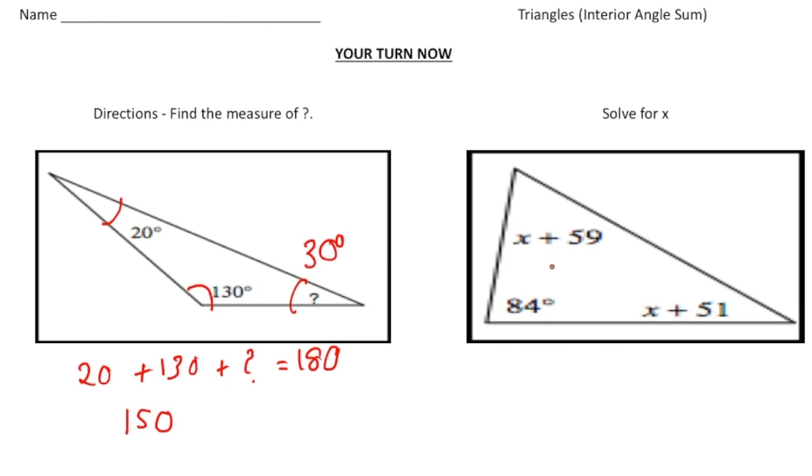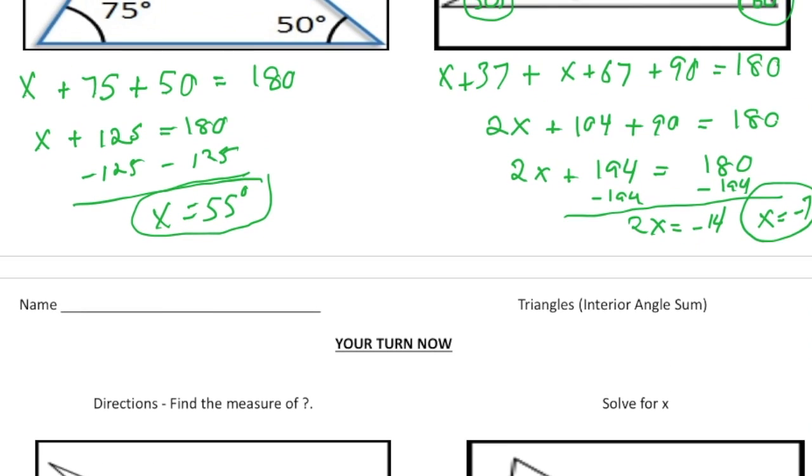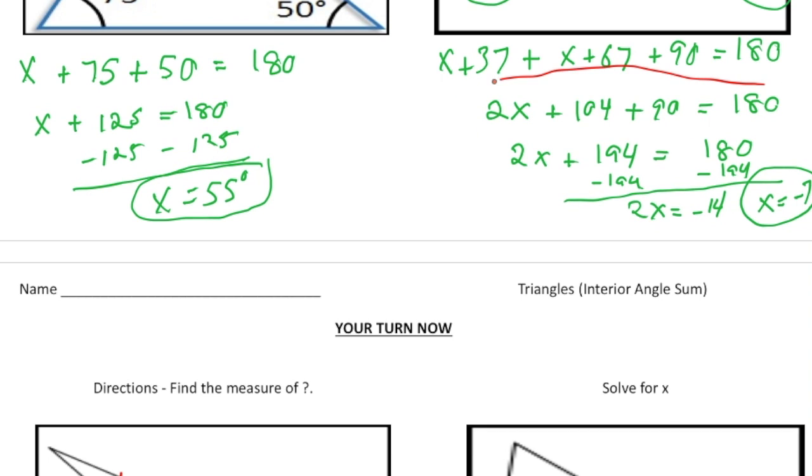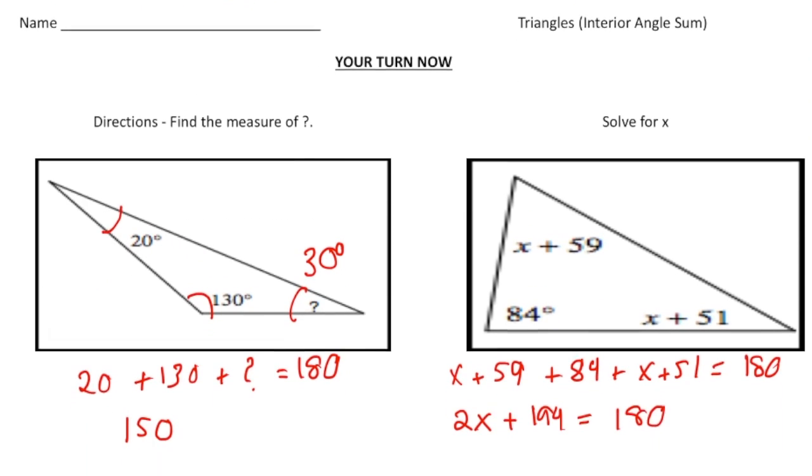The second one, we have x plus 59, 84 degrees, and x plus 51. So the equation is going to be x plus 59 plus 84 plus x plus 51 equals 180. And now when I simplify the left-hand side, we're going to get 2x plus 194 equals 180. And this problem is actually very similar to the one up here in the notes. It's the same equation as this, which means the solution is going to be the same. So our solution is going to be x equals negative 7.